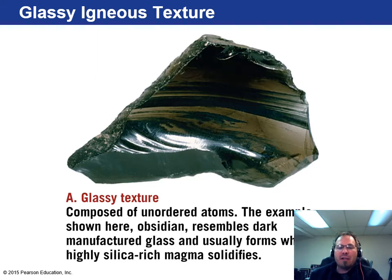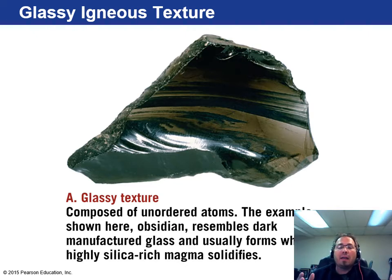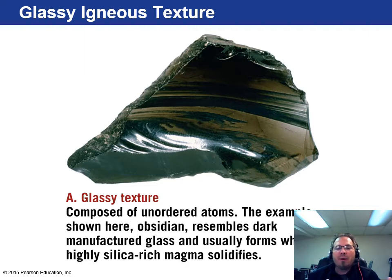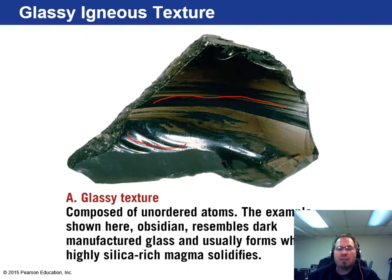Glassy texture, like obsidian — the magma is completely amorphous where it came out as lava and hit the ocean, like you see in Hawaii where it creates steam. There's no time for any crystalline structure to form; it's just pure glass. The reason it's black is because of all the impurities in this silica-rich magma. If you remember from chapter 2, obsidian has that conchoidal fracture — those rounded shell-looking things, like quartz does.